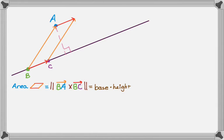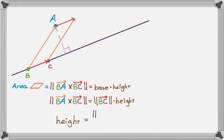That height is actually the distance from the point to the line. So the magnitude of this cross product is the base, which is actually just the magnitude of BC, the vector of BC, and then times the height, which is that distance that we're looking for, which means that the height is the magnitude of the cross product divided by the magnitude of BC.